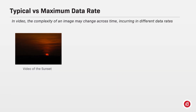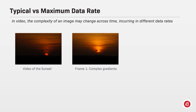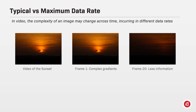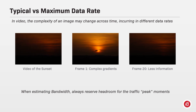When working with video, there are several still images to be compressed in a sequence. Each of these frames will have different information. Some may be more complex, with color gradients and a lot of details that need to be captured, generating a lot of data. Some can present less information and therefore could be compressed using less data, as more pixels would maybe have the same information. When estimating bandwidth, always reserve headroom for the traffic peak moments.